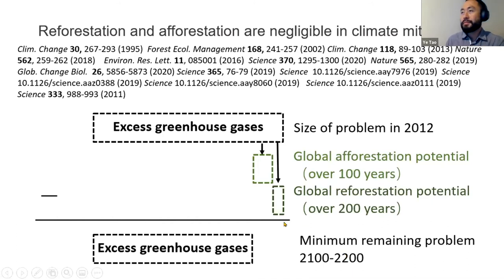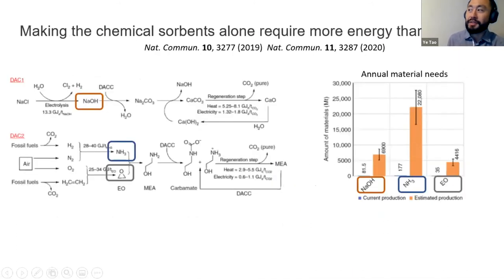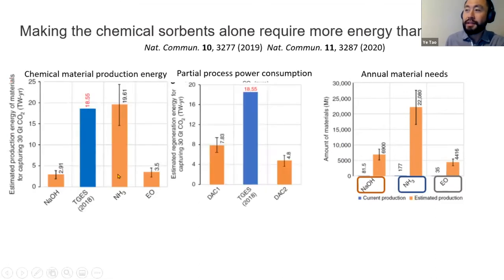What about capturing carbon industrially? We have to make these sorbents. Currently, if we want to capture just our current annual emissions, we need to increase the production capacity of these sorbents by more than two orders of magnitude on average. That's not the only challenge—the real challenge is that the energy required to make these sorbents is on the same order of magnitude and sometimes exceeds the total fossil fuel thermal power that we have available.